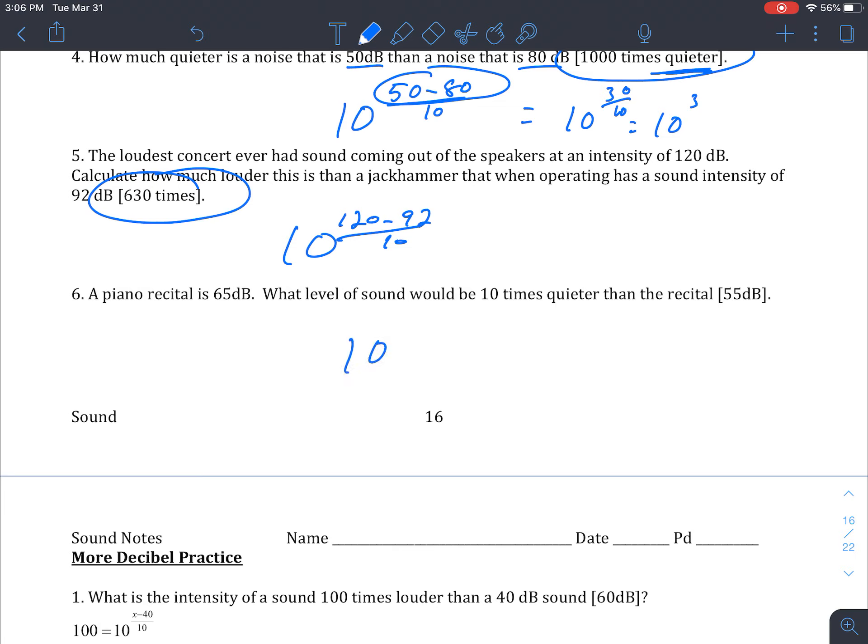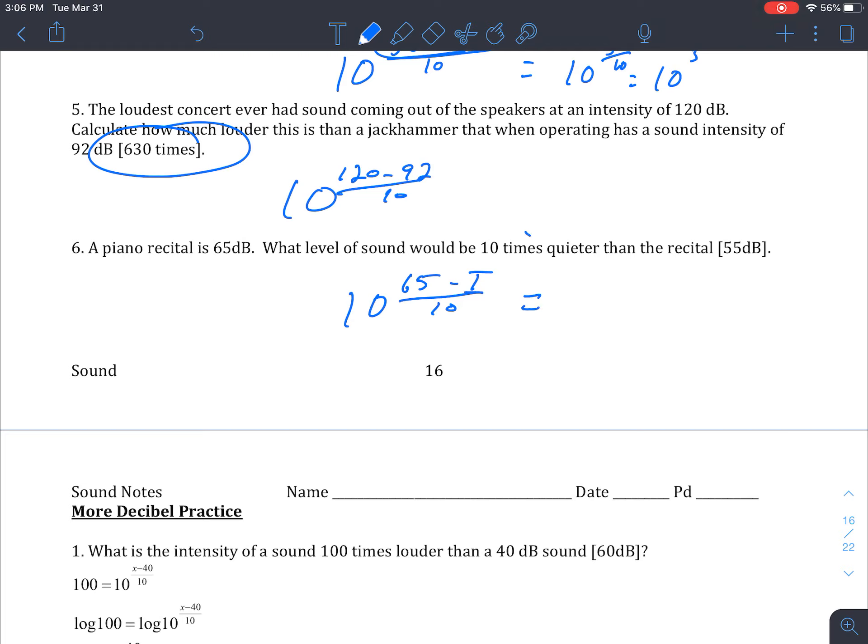So then the last one I'll do with you, we need to find out what this missing sound would be. So we have a piano recital at 65. We want to see what loudness is 10 times quieter, so that's going to be our missing intensity. So we had the 65. I'm going to just call it I, since we're looking for intensity, and call it X or whatever variable you like. It's over 10. And that's going to equal 10 times louder. So then we just solve for our missing variable, which in this case would be 55 decibels. And that's it.